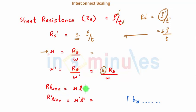My R line which is given by R into L. For R' line, this is R' into L'. This increases by a factor of s and L' is also not scaled so that is L.